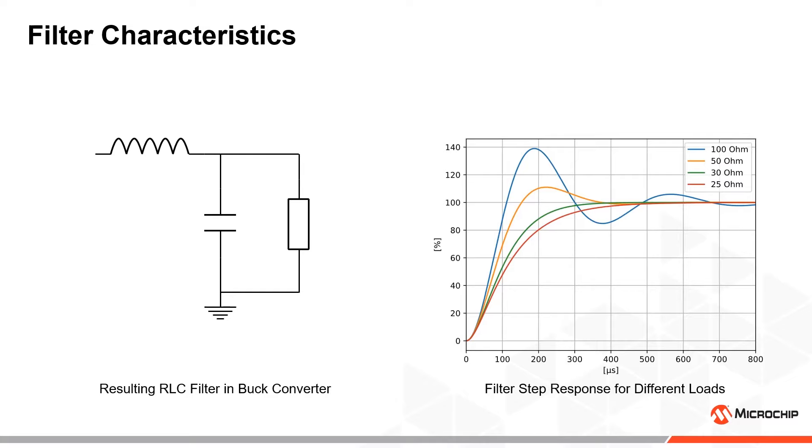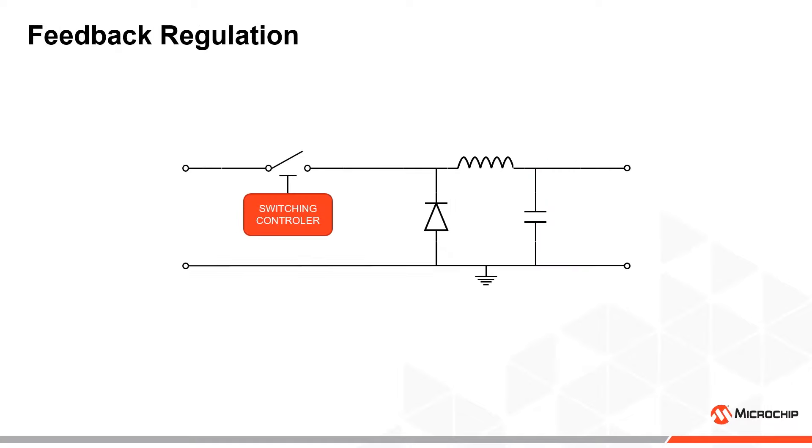In practice, this means that using a constant duty cycle for the switch, the regulator will output different voltages for different loads. We can counter this effect by adding a feedback loop to the switch controller.